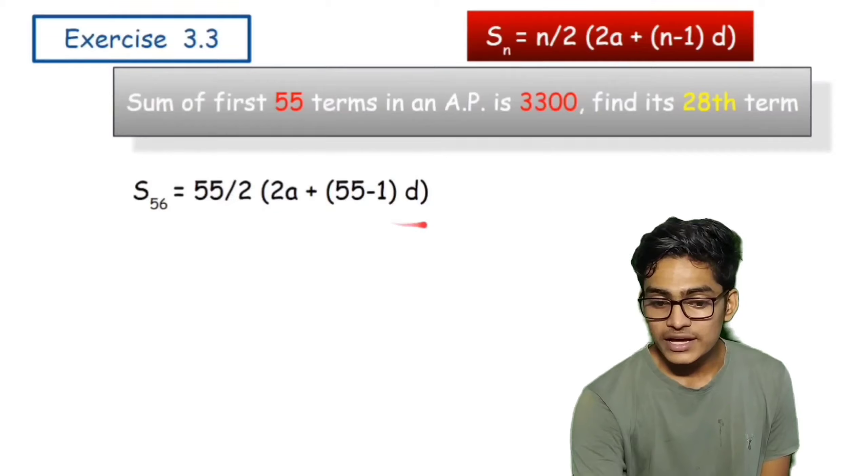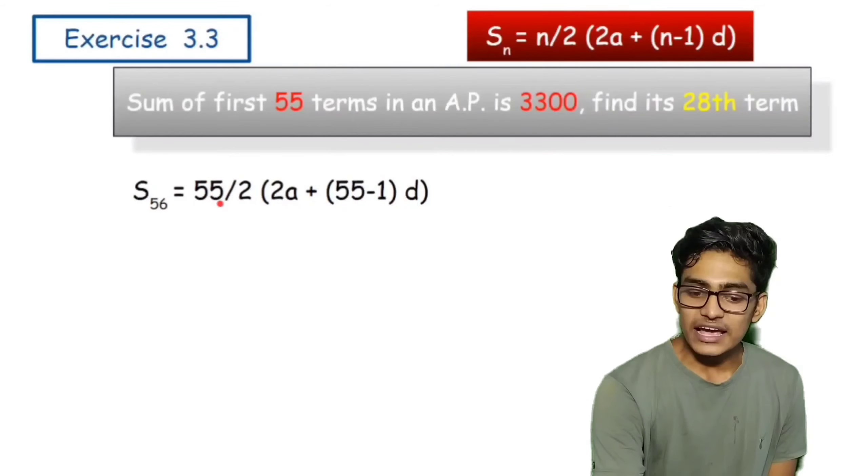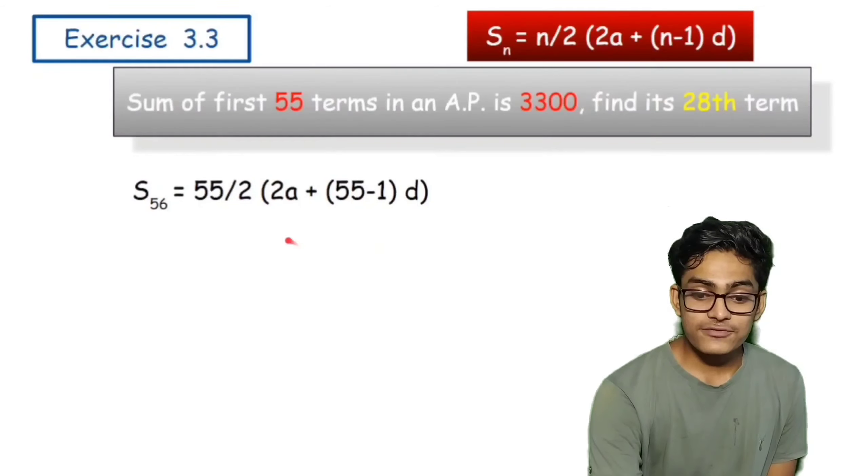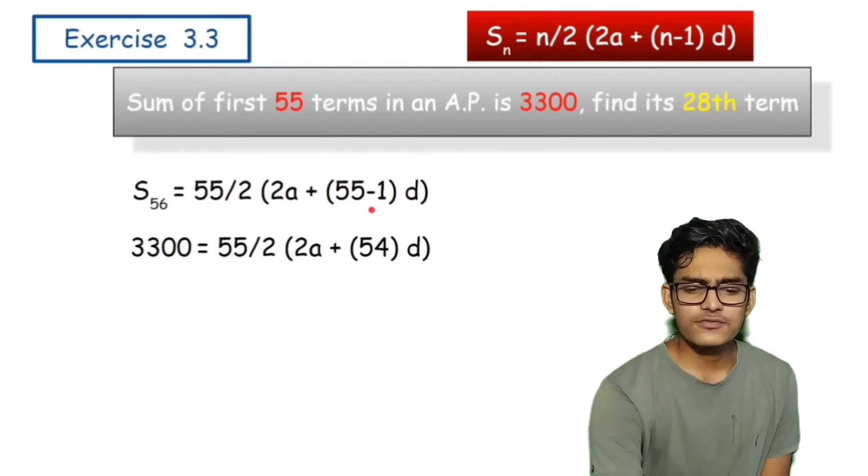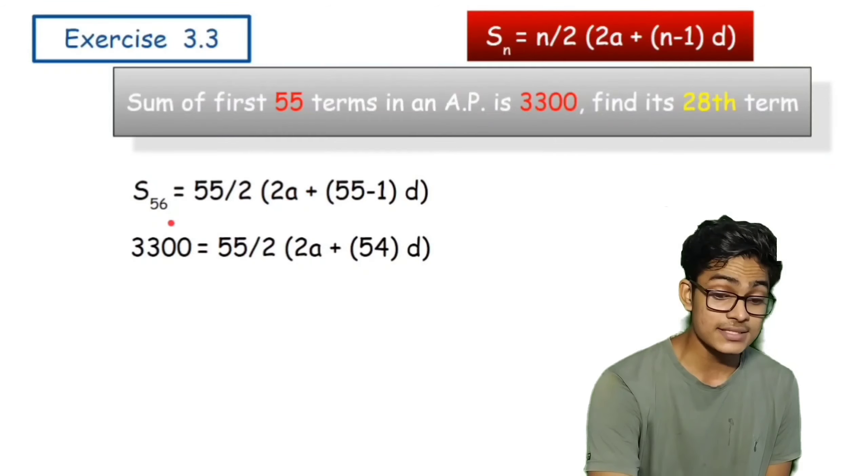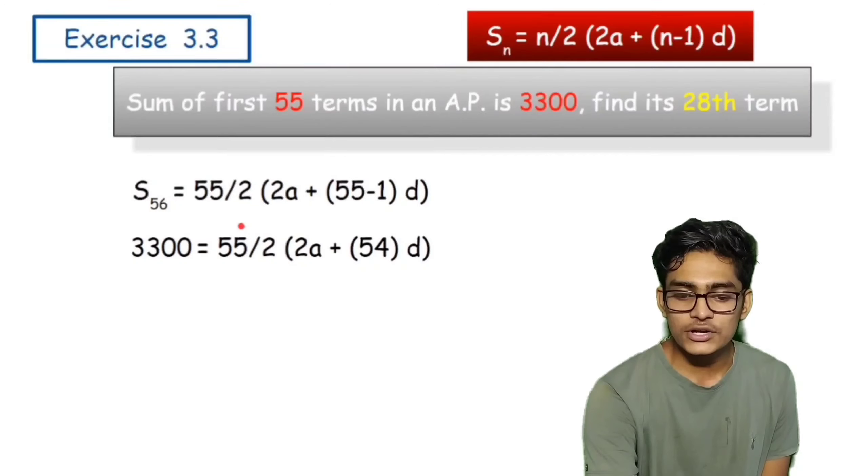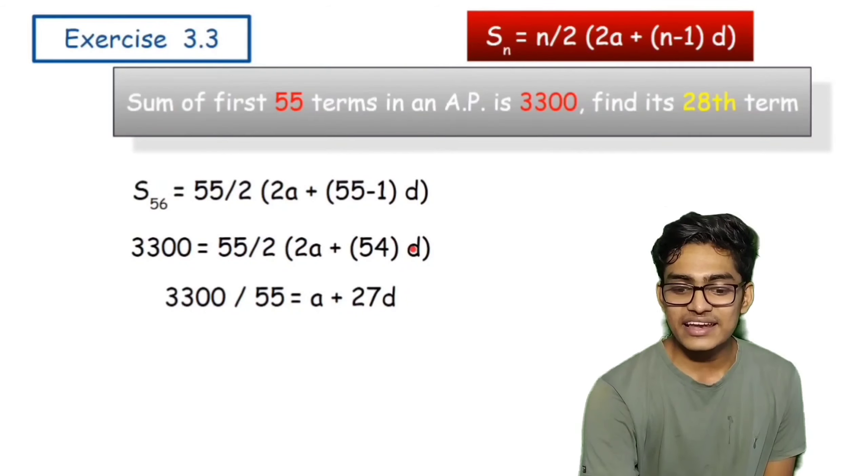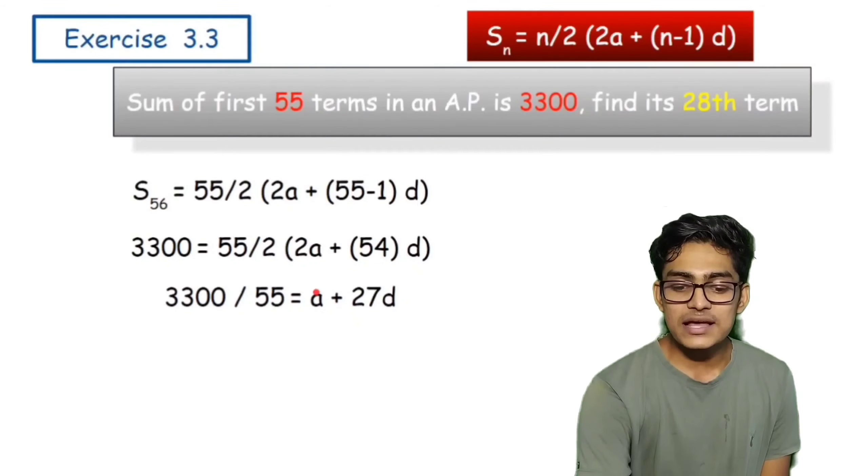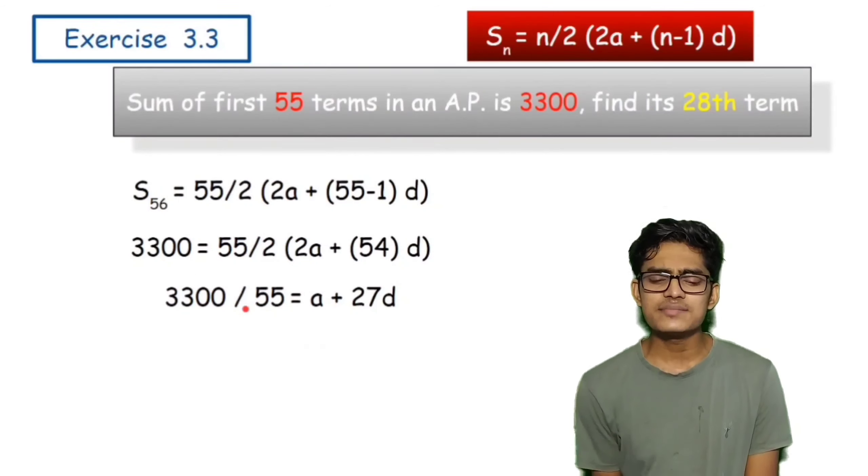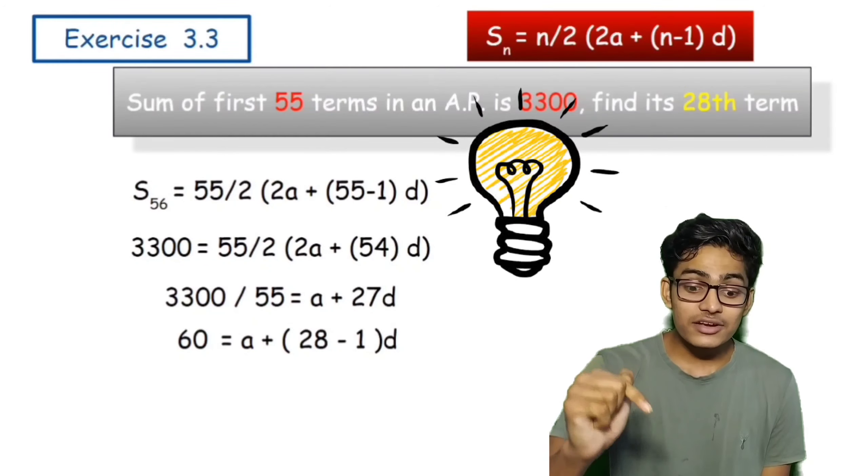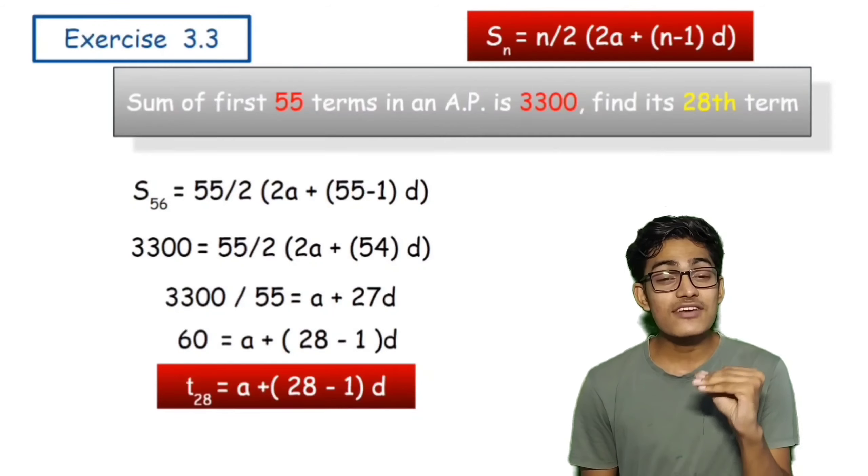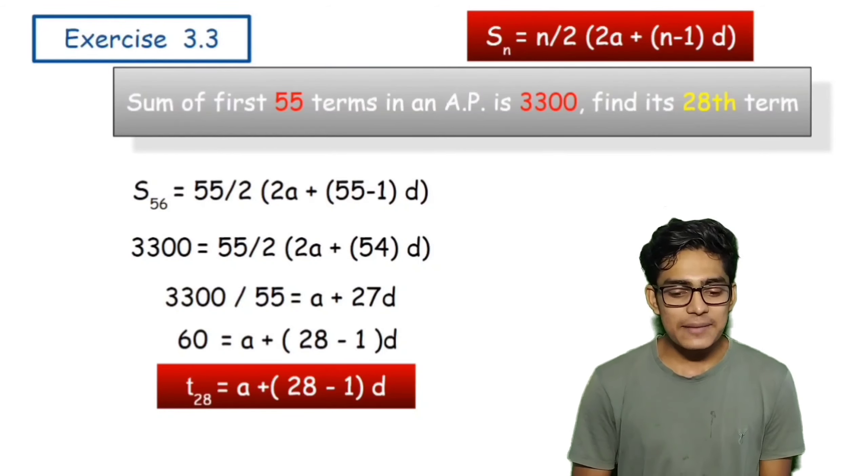So hum logoo dekhte hai kaise solve karne wale hai. This sum of 55 ka hum logoo meh formula meh substitute karne hai. Idhar jidhar bhi hum logoo ka n ka value hai that is 55 hai, udhar hum logoo meh 55 substitute kya hai. So make it correct, 55, 55 hum logoo meh idhar idhar lika hai. Substitute karte hai 55 ke zake pe, hum logoo meh 3300 substitute kya kiya kyunki that is the answer. And then we divide it, ye joh 55 hai isko hum logoo denominator mein lelege and ye joh 2 hai ye 2 ko hum logoo divide kareege. And if you notice the equation, this looks very very similar to t28 ka equation, that is a + (28-1)d.